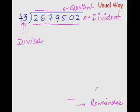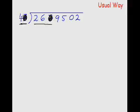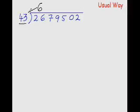Let's start dividing by breaking the dividend into manageable parts. First, divide 267 by 43. To make it manageable, ignore the 3 and the 7, and ask how many times 4 goes into 26. 4 × 6 = 24, so write 6 as the first quotient digit. Then multiply: 6 × 3 = 18, 6 × 4 = 24, and 24 + 1 = 25.